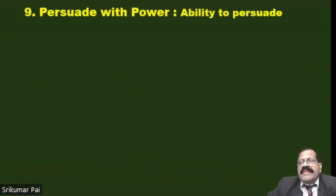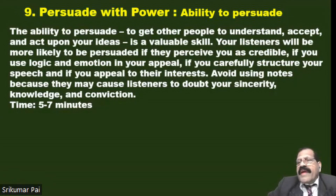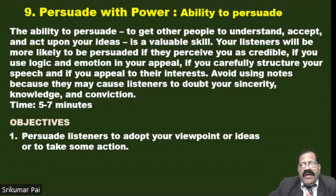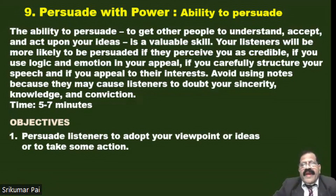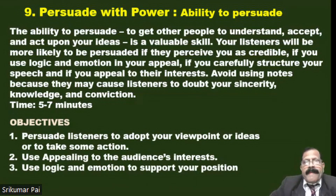Project number nine is persuade with power — how you can persuade others. The ability to persuade, to get other people to understand and act upon your ideas, is a valuable skill. Your listeners will be more likely to be persuaded if they perceive you as credible, if you use logic and emotion in your speech, and if you carefully structure your speech. Avoid using notes as they may cause listeners to doubt your sincerity. Objectives: persuade listeners to adopt your viewpoint or take some action; appeal to audience interest; use logic and emotion to support your position.